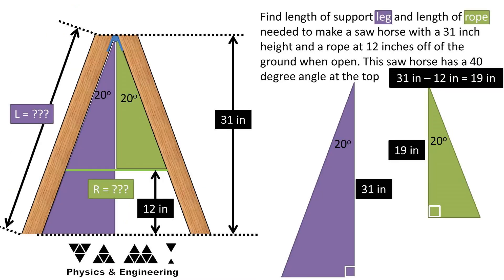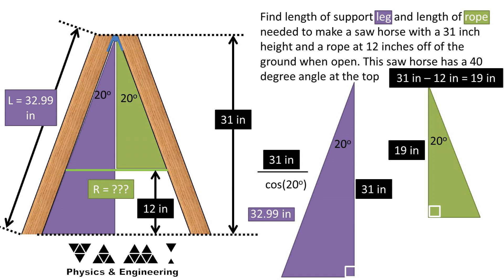Back to the problem. If we plug in our numbers, we get a length of the leg of 32.99 inches. And we get a length of the rope needed of 2 times 6.92, or 13.84 inches.